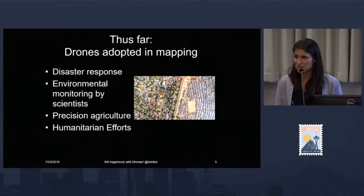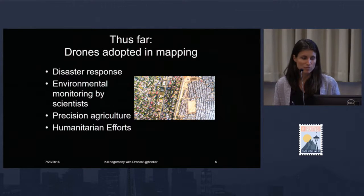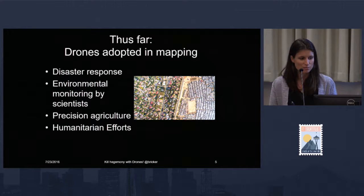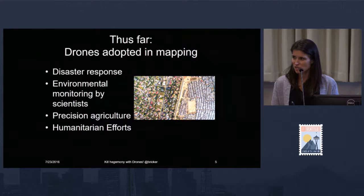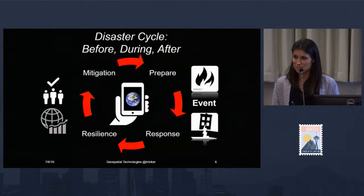In the media, when we do see drones adapted for mapping, it's primarily for disaster response, environmental monitoring by highly trained scientists, precision agriculture, and humanitarian efforts. Now I'm going to go through and show some exciting images of these examples.